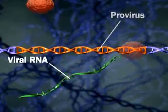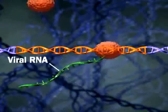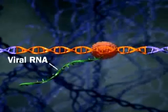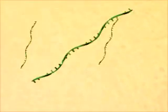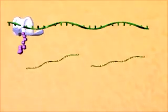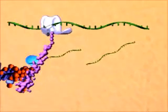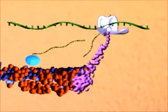Eventually, transcription produces viral RNA. The viral RNA travels to the host cell's cytoplasm, where some is reserved for new viral genomes and some is translated, producing new viral proteins.